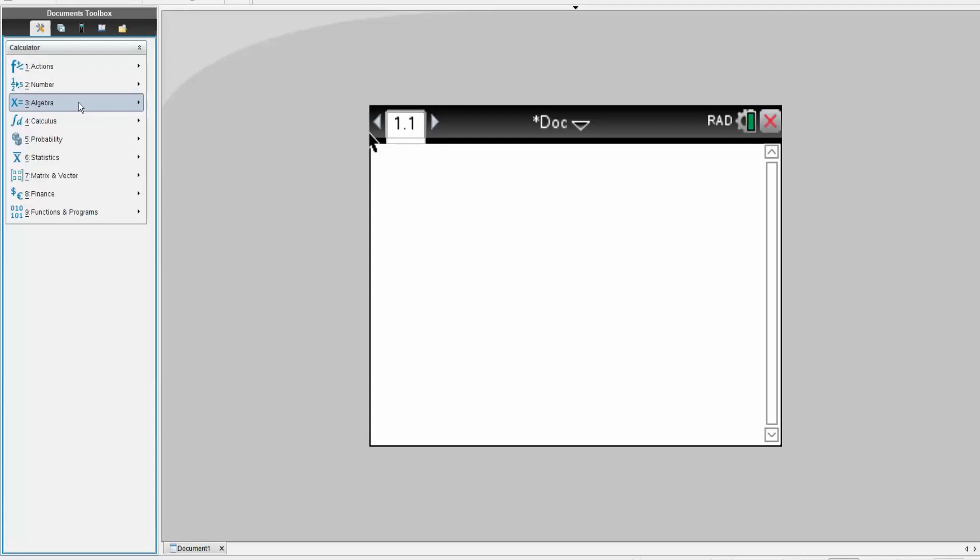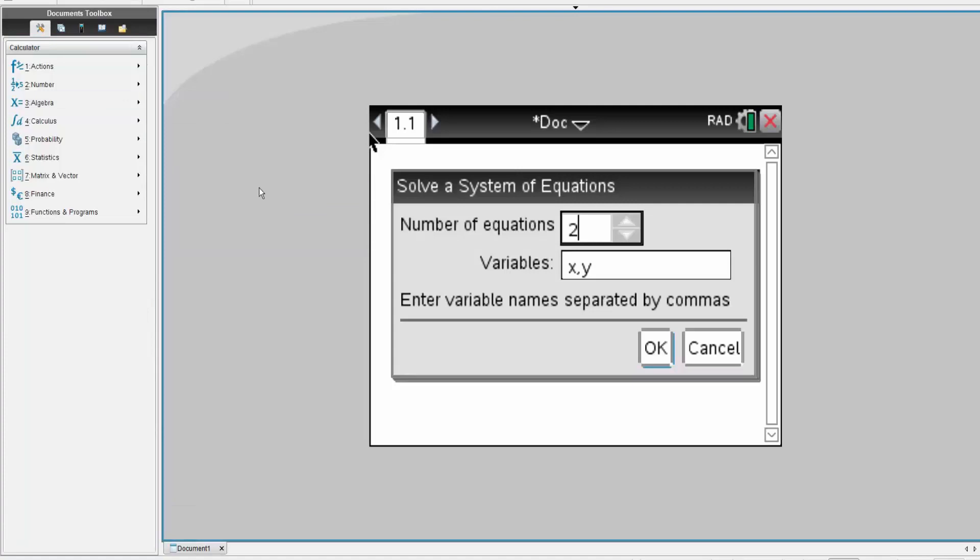So I will go to algebra. I will go to solve systems of equations. And I will go solve systems of equation one. I had how many equations? We had four equations and five variables. So four equation. And in this case, we have five variables. So we have A, C, B, D, and E.